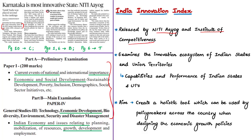This index is based on a study of the innovation ecosystem of the states and union territories of India, examining their innovation capabilities and performance. It is an outcome of extensive research and analysis. The aim of the index is to create a holistic tool for policymakers across the country so they can identify challenges to address and strengths to build upon when designing economic growth policies for their regions.